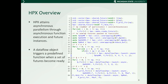HPX, on the other hand, obtains asynchronous parallelism through asynchronous function execution and future instances. A dataflow object triggers a predefined function when a set of futures become ready. Combining a dataflow object with asynchronous execution provides a powerful mechanism for maintaining data dependencies and building an execution tree. We show the HPX dataflow model in this listing, which implements the given snippet. In line 20, for example, the i-th block of Q will be computed using the linear combination kernel once the i-th block of Y becomes available — that is, all the corresponding SpMM tasks are executed.